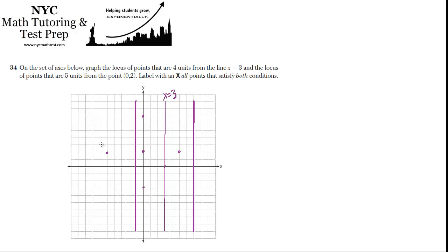And now we can draw our circle. This will help us draw a circle a little more accurately because it can be tough on a test. So I'll try to go through all the points. It's not a great circle, but it'll do. So that's the locus of points that's 5 units from the point (0, 2).